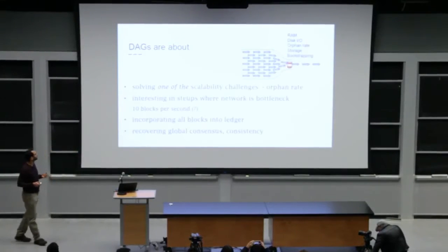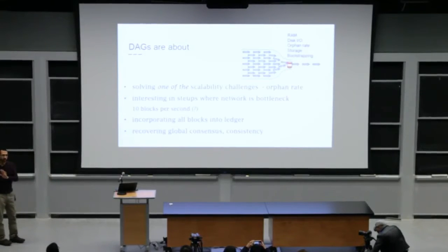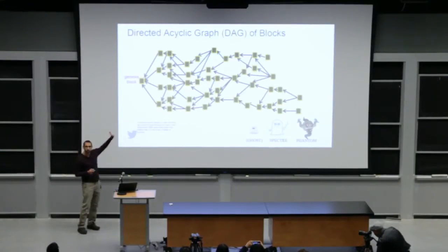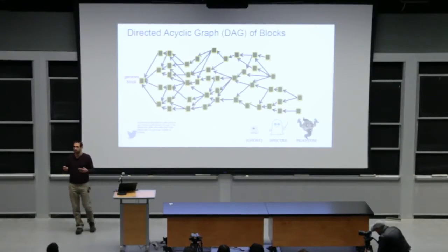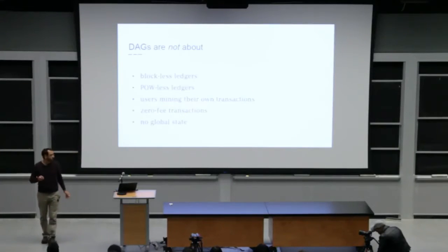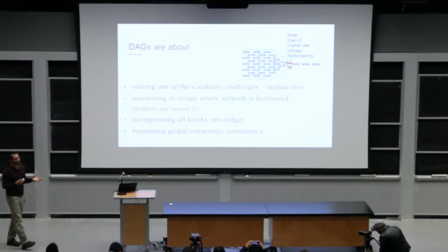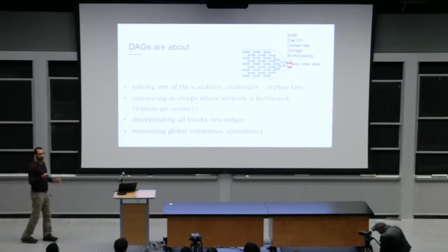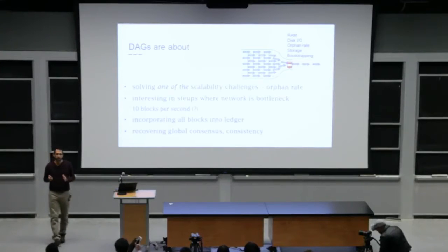In truth, DAGs are about something else. It's just a data structure, merely a data structure, a generalization of Satoshi's chain. And the reason we're using these data structures is to solve one of the scalability challenges, namely the orphan rate problem.